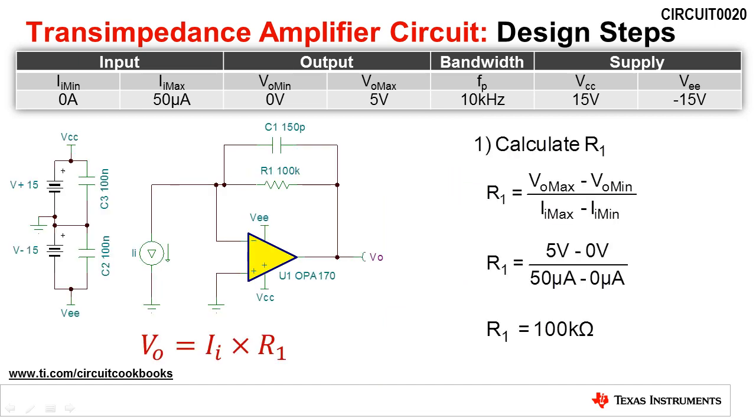The first design step is to calculate the value of the feedback resistor R1 based on the required transimpedance gain. We calculate this by dividing the output voltage swing by the input current range, as shown in the equation. The resulting value for R1 is 100 kilo-ohms.